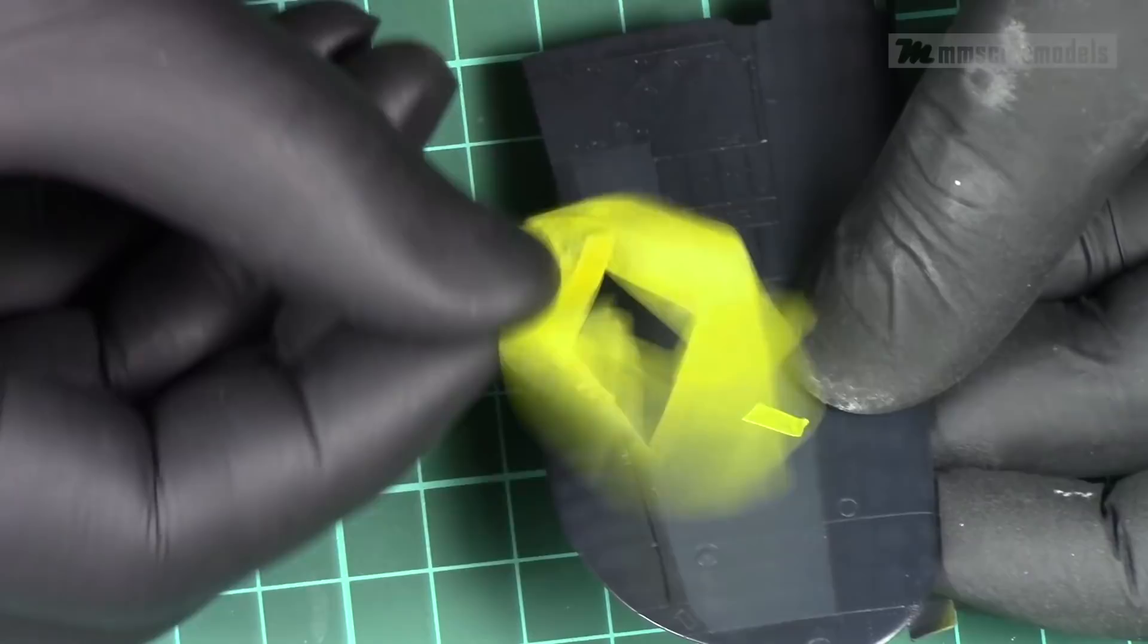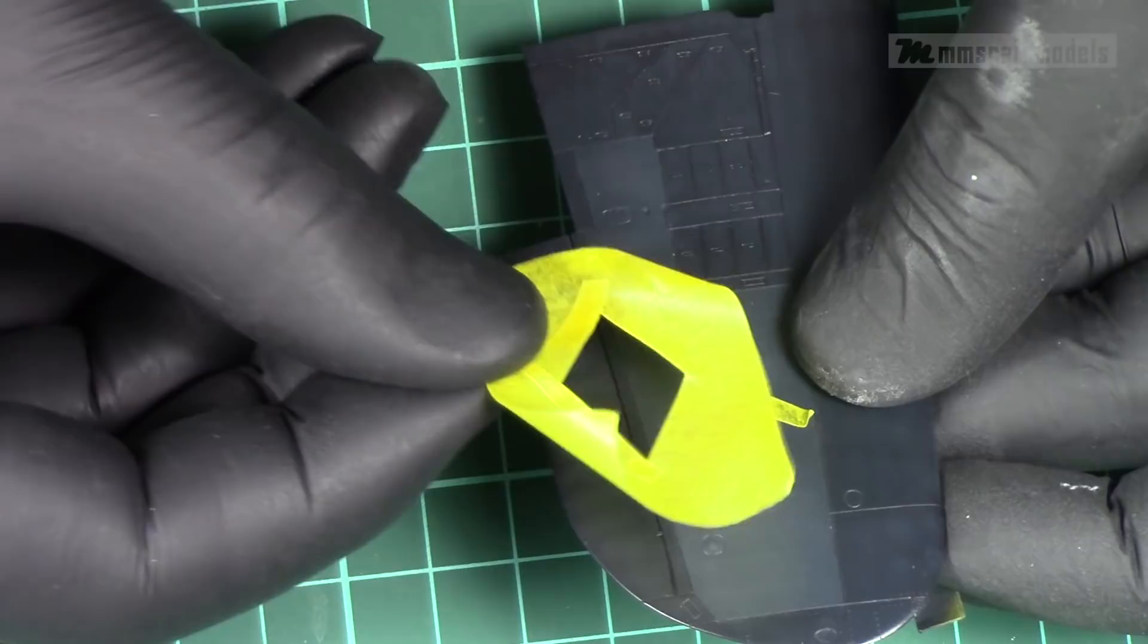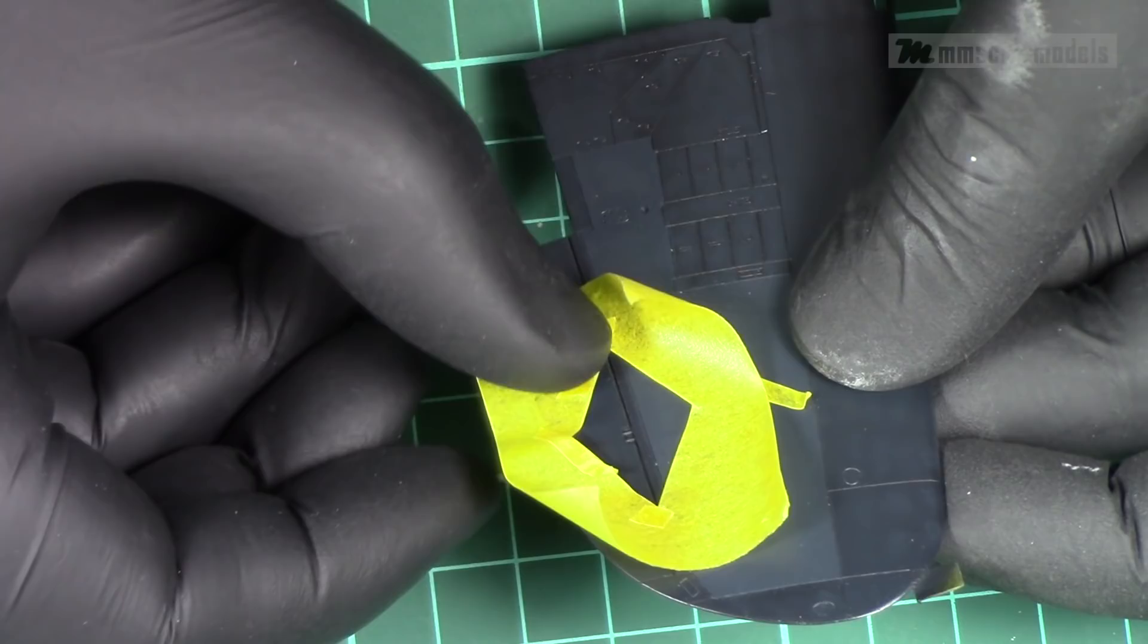In some cases there are plenty of reference points to help with placing the stencil in position. In this case I can use the ribs and the aileron joint as a guide.